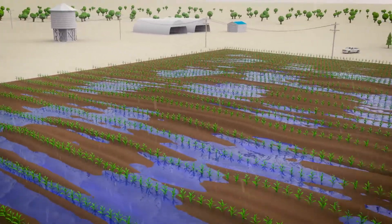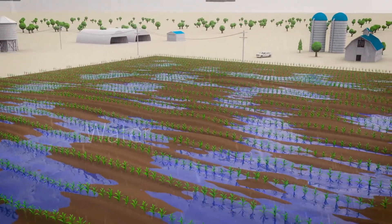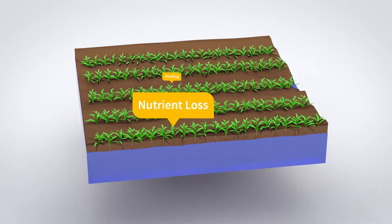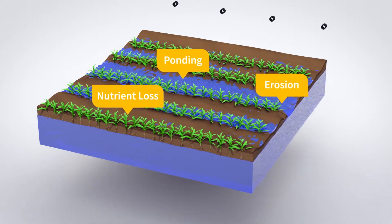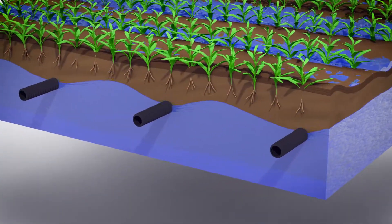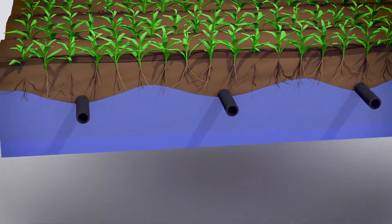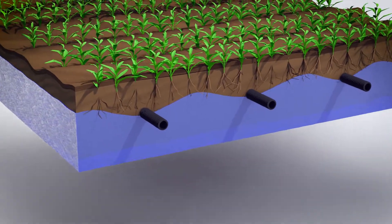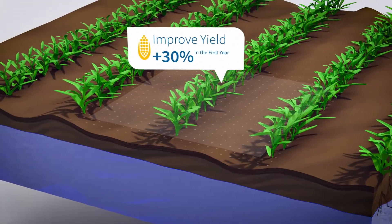When it comes to improving farming operations, few things are as critical as water management. In fact, for fields with too much water or soils that strongly retain moisture, installing subsurface drainage systems can optimize crop root depth and provide better control of your field's water table, often increasing yield by more than 30% in the first year.